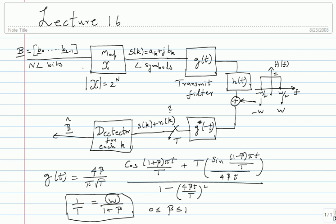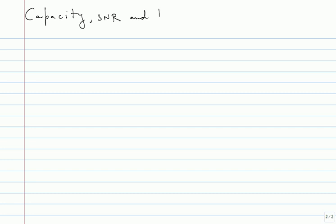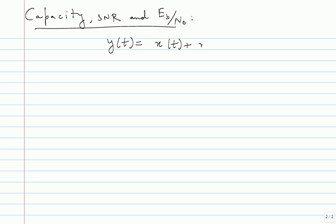The next few things we will see are notions of capacity, SNR, and a quantity called E_b over N_0. These are the figures of merit that we will be shooting for. Whenever we want to communicate, we want to communicate close to capacity, because capacity tells you that's the maximum you can do. SNR is an important parameter we saw, and E_b over N_0 also turns out to be a very crucial parameter.